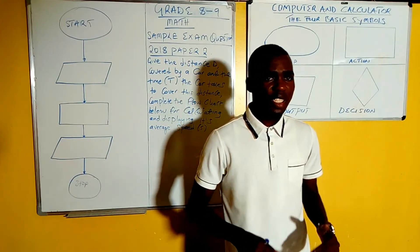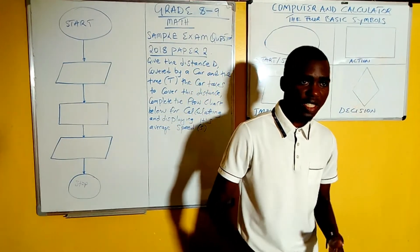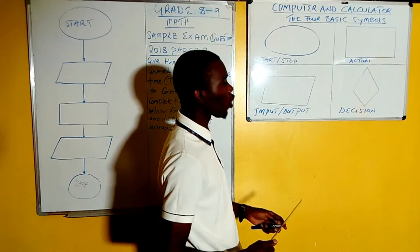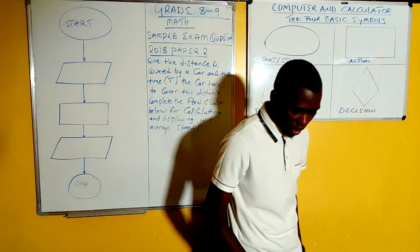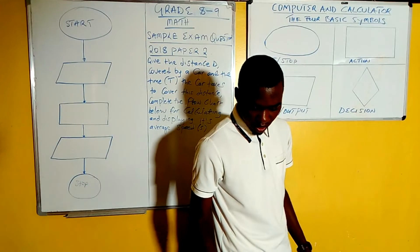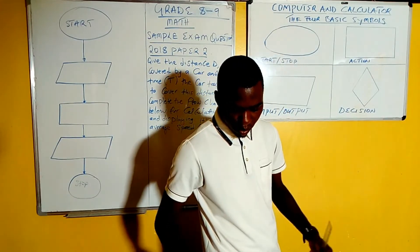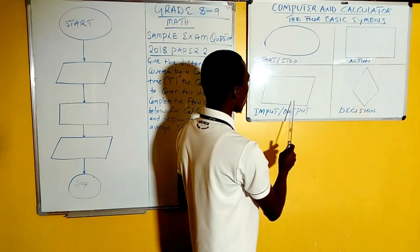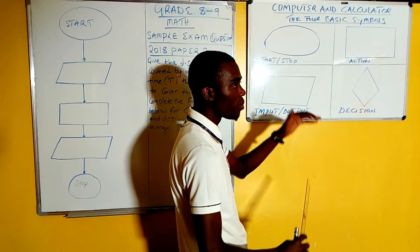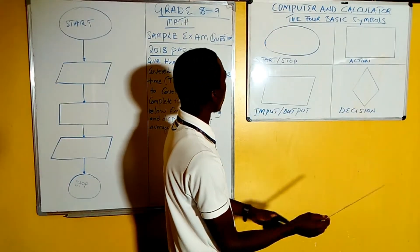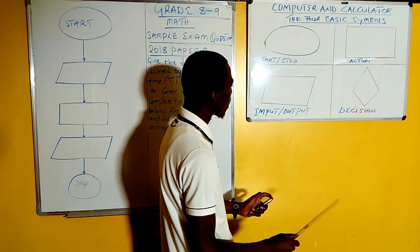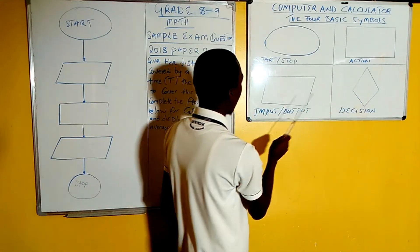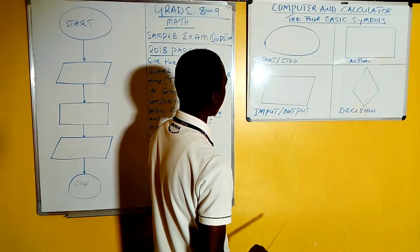Today we are interested in looking at the exam question that comes year after year. These are the four basic symbols of a flowchart. By definition, a flowchart is a graphical representation of the problem-solving process. We form a flowchart by connecting these four symbols with arrows to solve a problem. The most important thing you have to know about computer and calculator is these four symbols, as you can see on the board here.